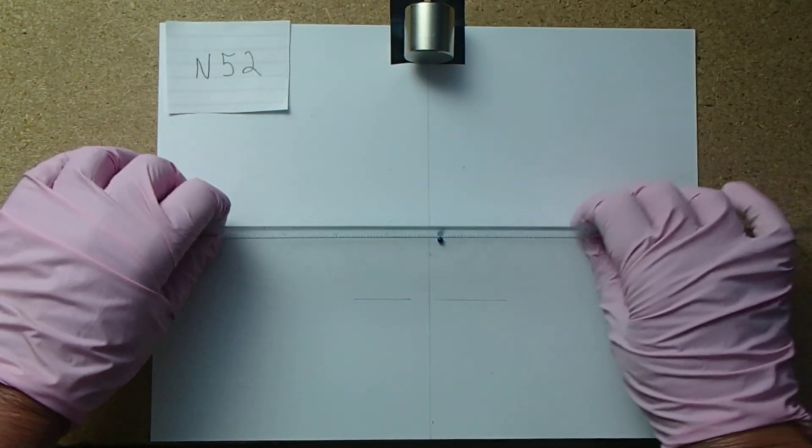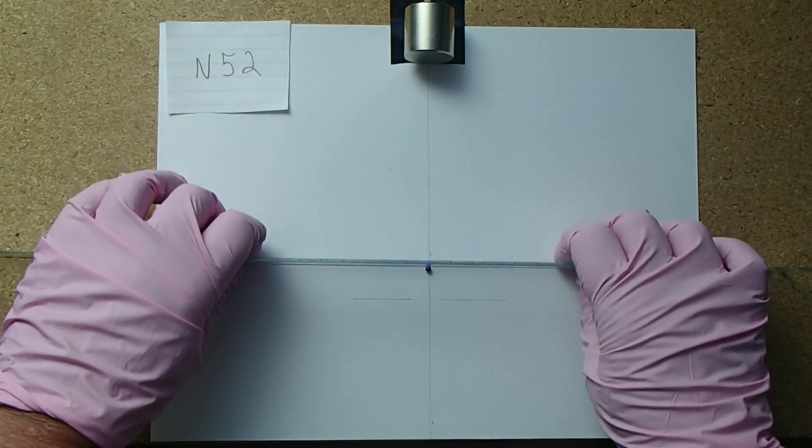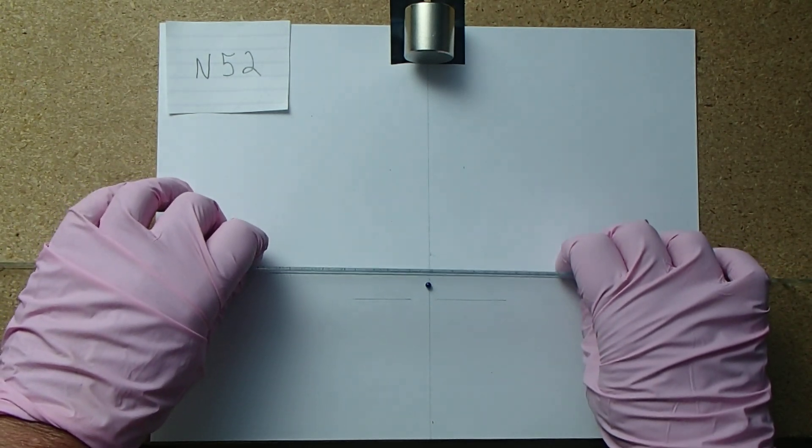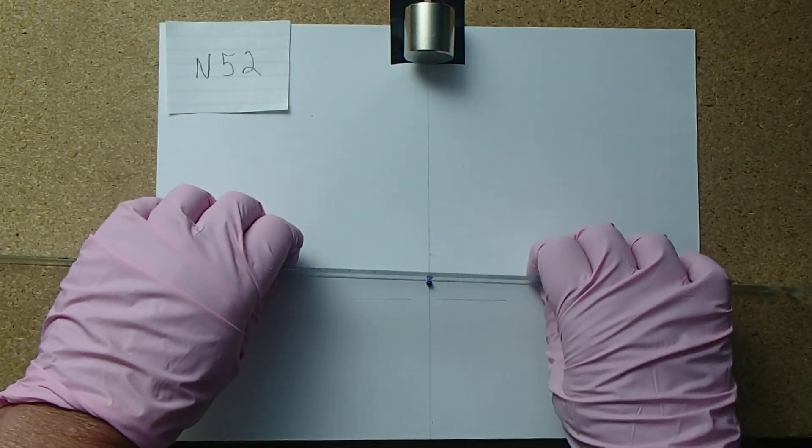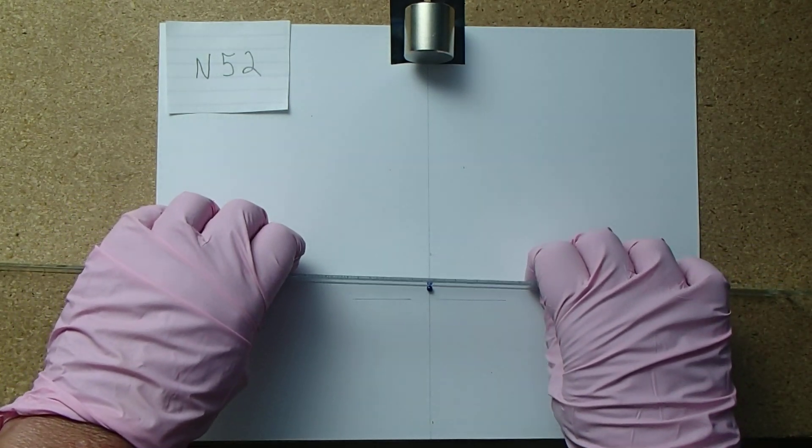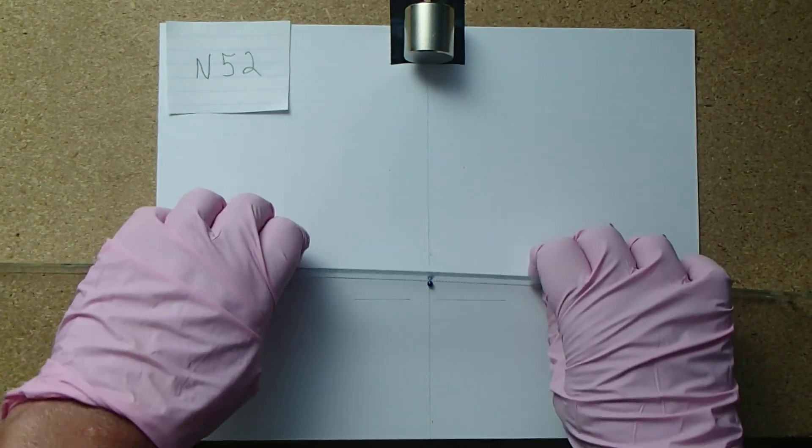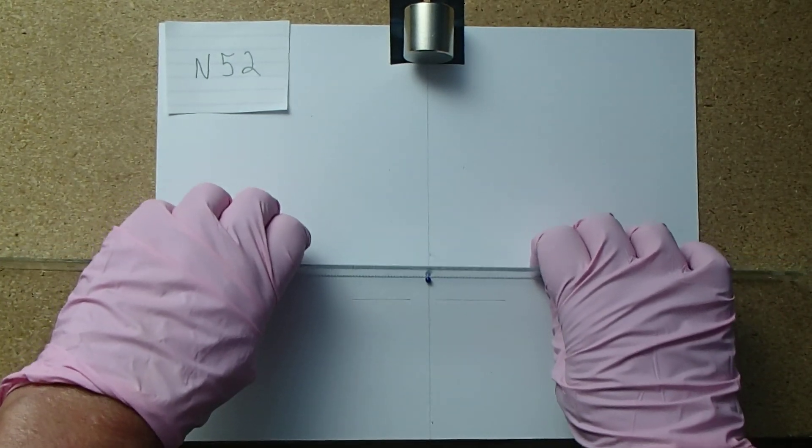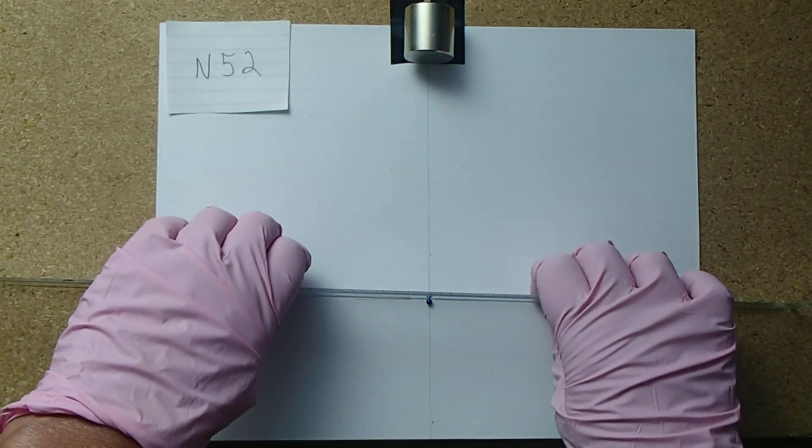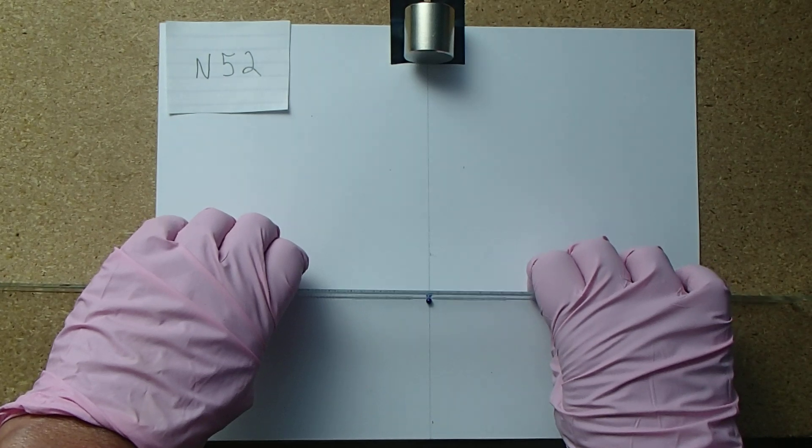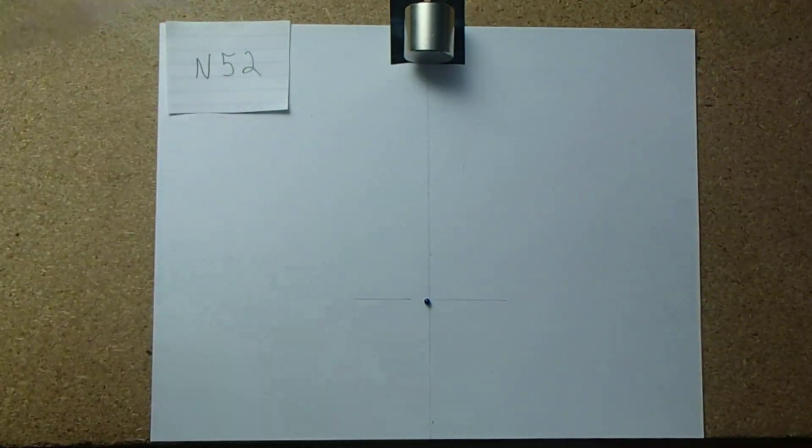So let's do it again. North, south. Forward, back. It stays there. It didn't want to stay there. I think there's a little hole in the paper there or something. But as you can see, it's still attracted to the magnet until I get to my line, and then I can let go.